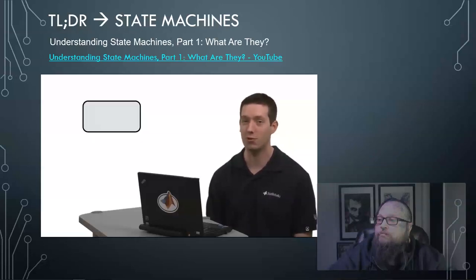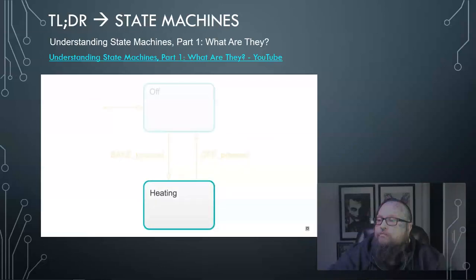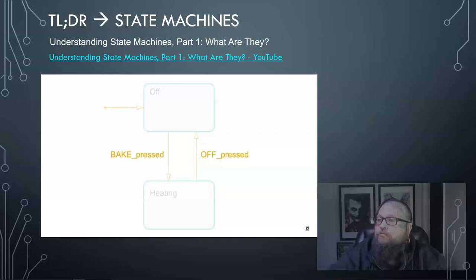Let's explore how state transition diagrams work using an oven's logic as an example. The modes of the machine are drawn as shapes — usually a rectangle or circle. This state transition diagram shows an oven that is 'off' when no one is using it, or 'heating' when someone decides to bake. Usually when you plug in an oven, it doesn't immediately start baking, so the state machine starts in the off mode by default, indicated with an arrow. Any arrow represents a transition — pathways that enable you to switch between states. The transition from off to heating happens when someone presses the bake button, called the 'bake pressed' event. Similarly, we go back to the off state when someone pushes the off button.